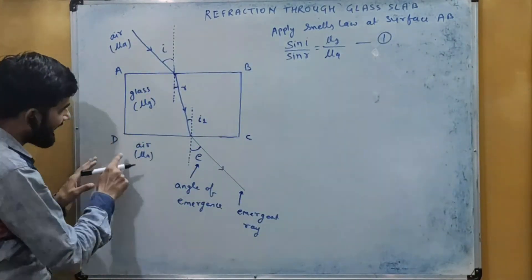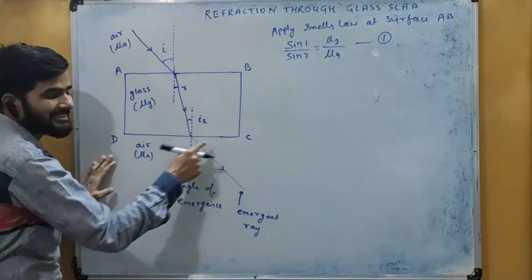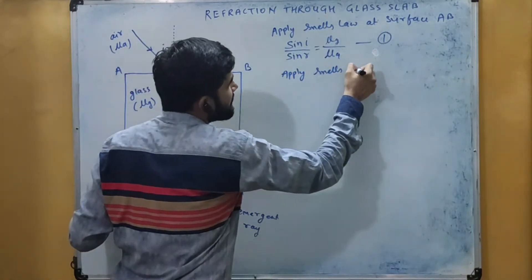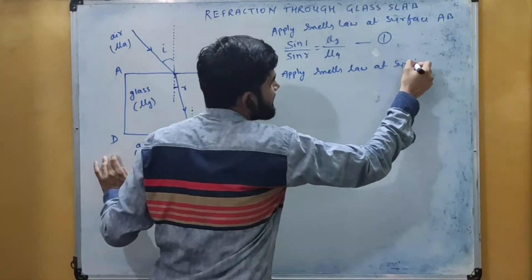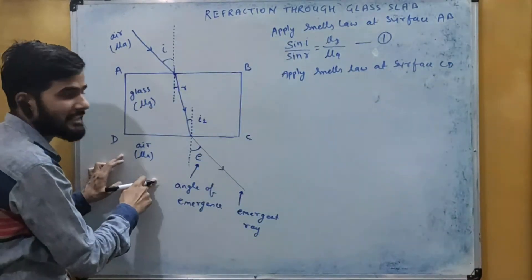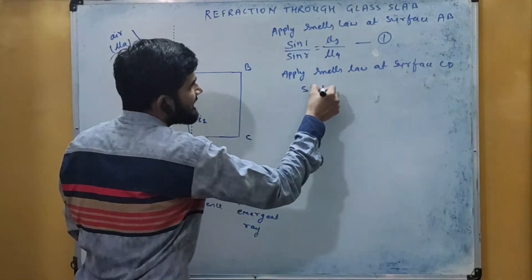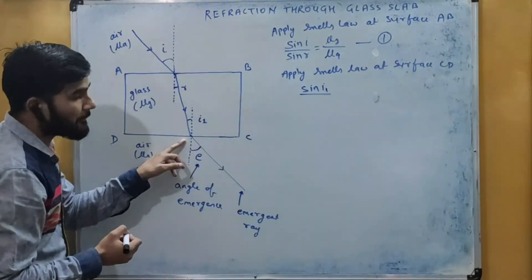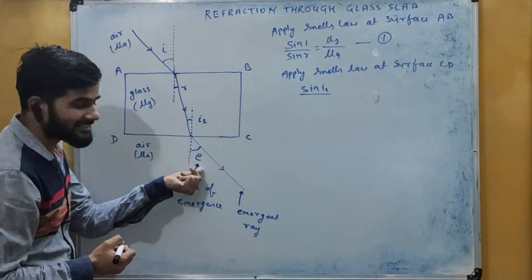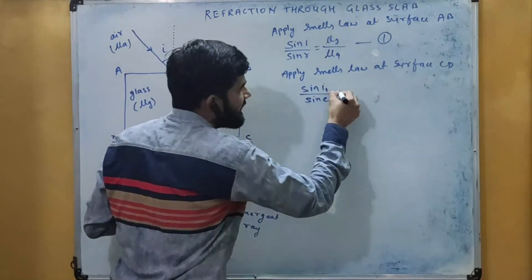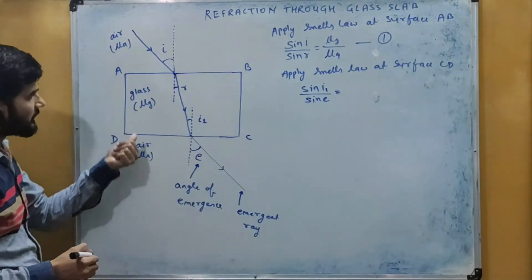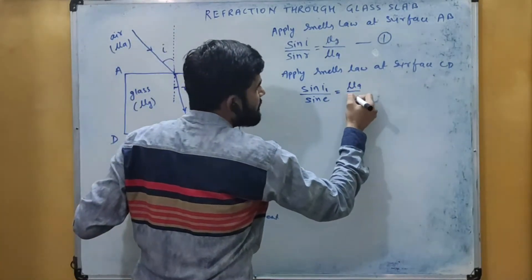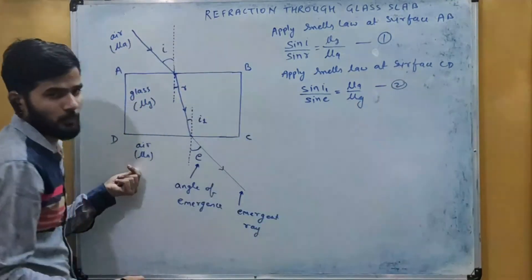Now this ray undergoes refraction at the interface DC. So we will apply Snell's law at surface CD. The angle of incidence here is i1, so it is sine i1 upon sine of the angle of emergence, sine e, and that equals the refractive index of the second medium with respect to medium 1 — that is mu a by mu g. This is equation number 2.